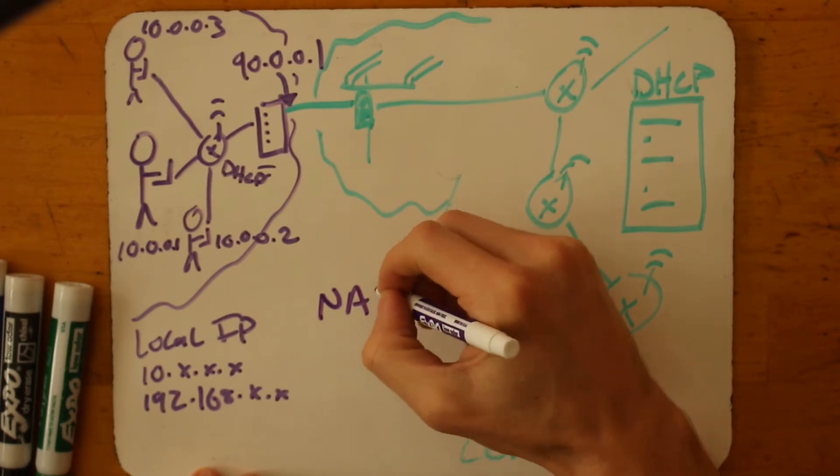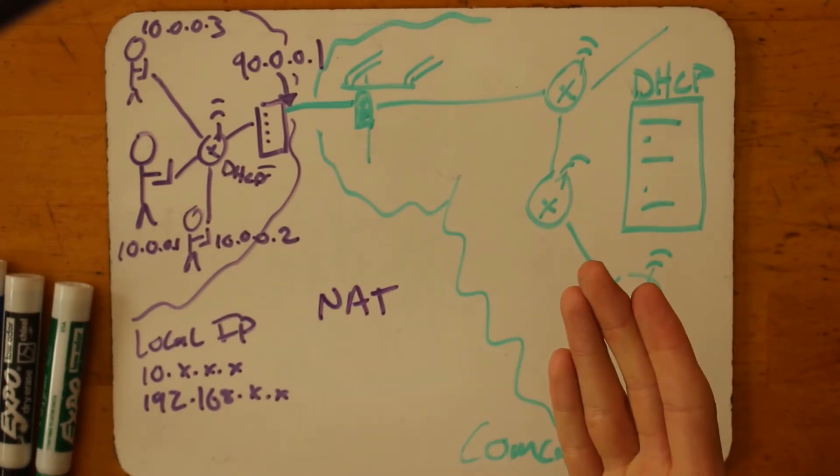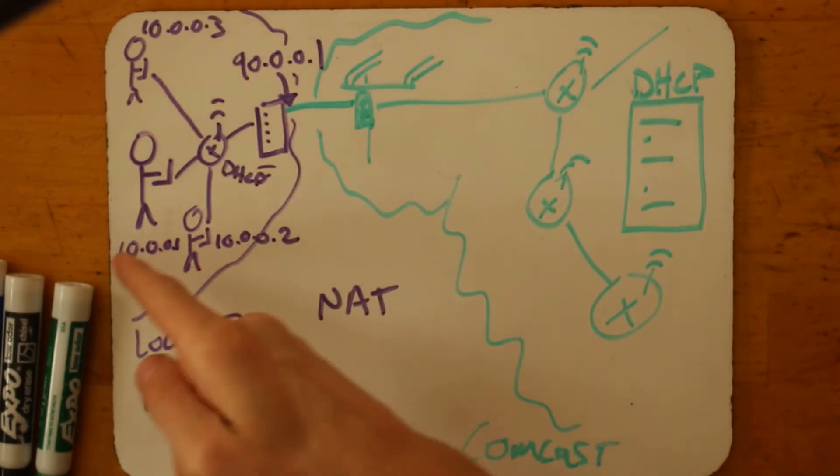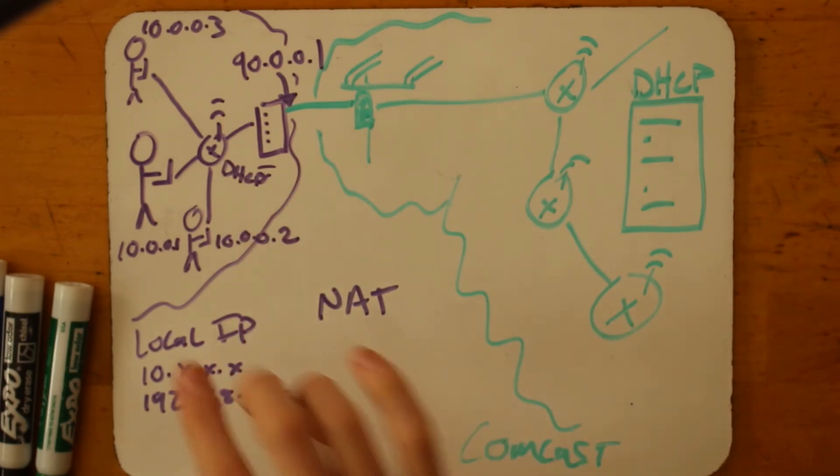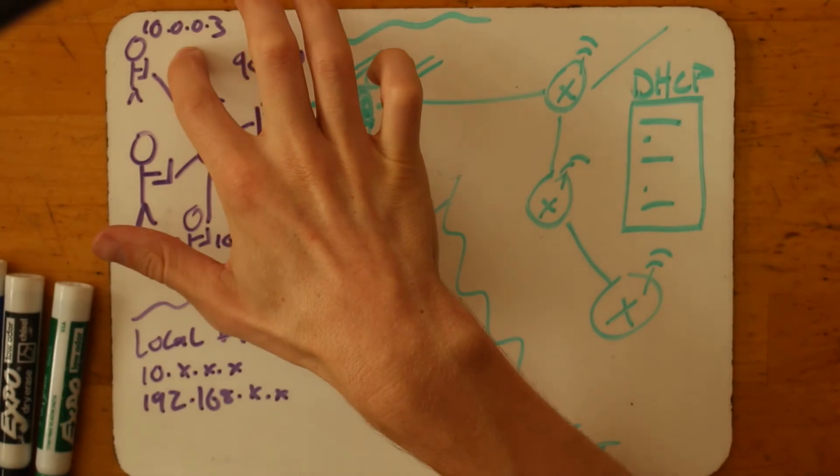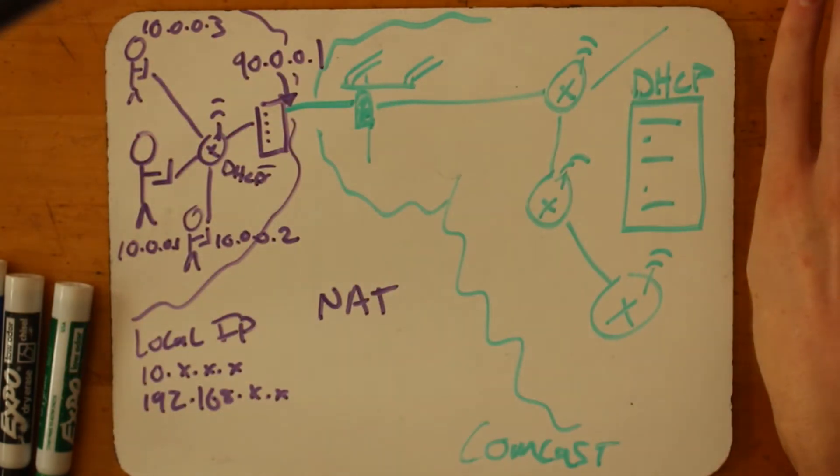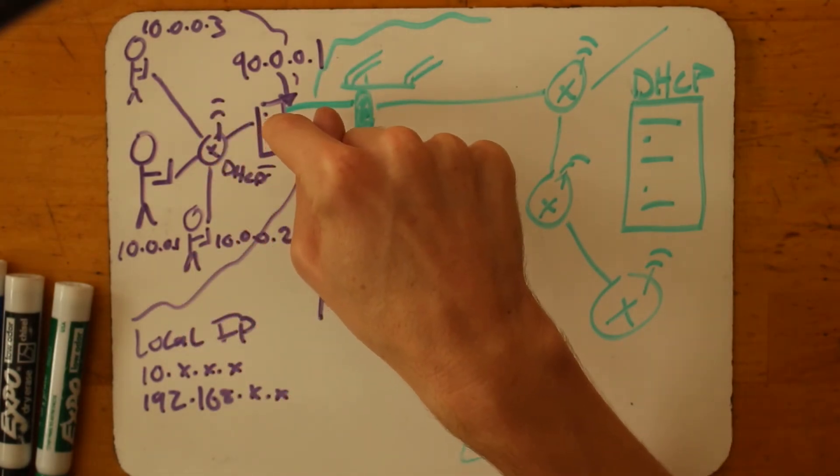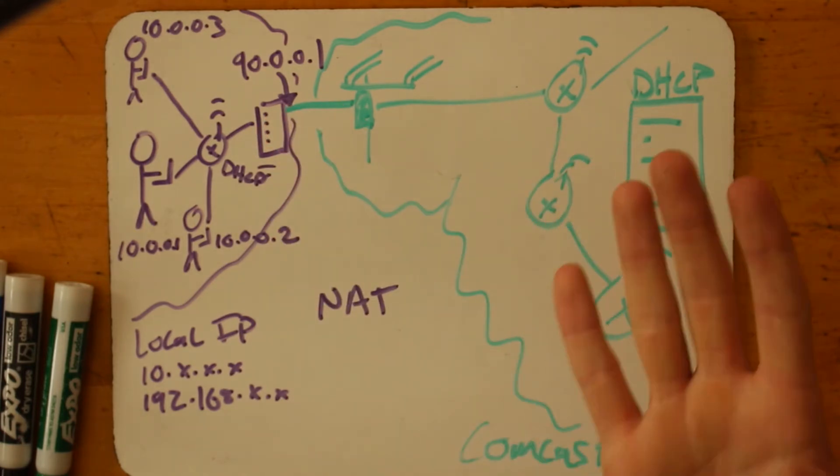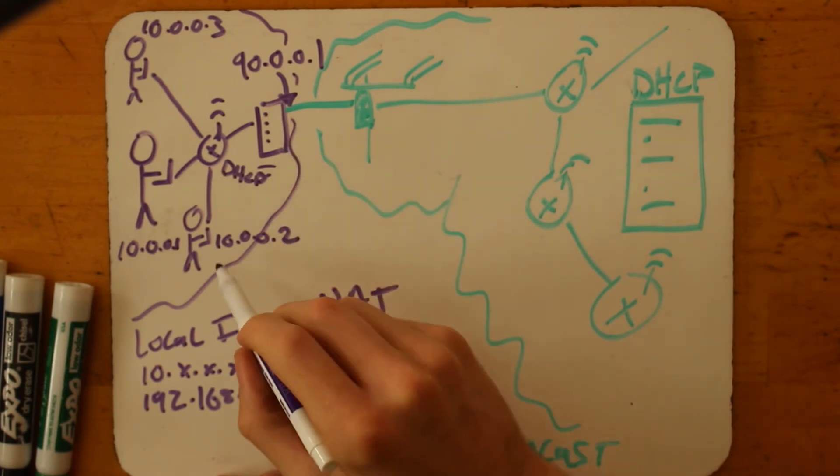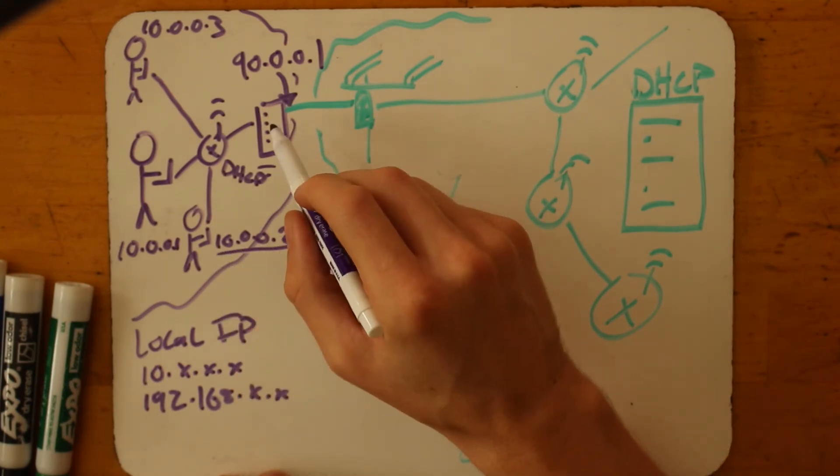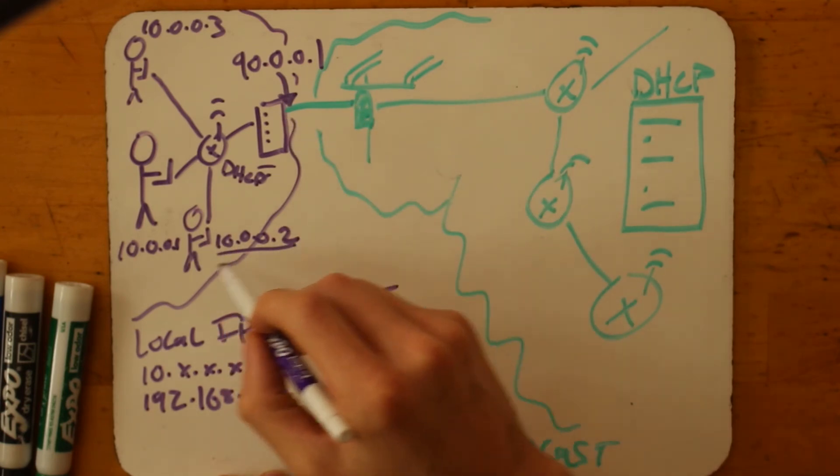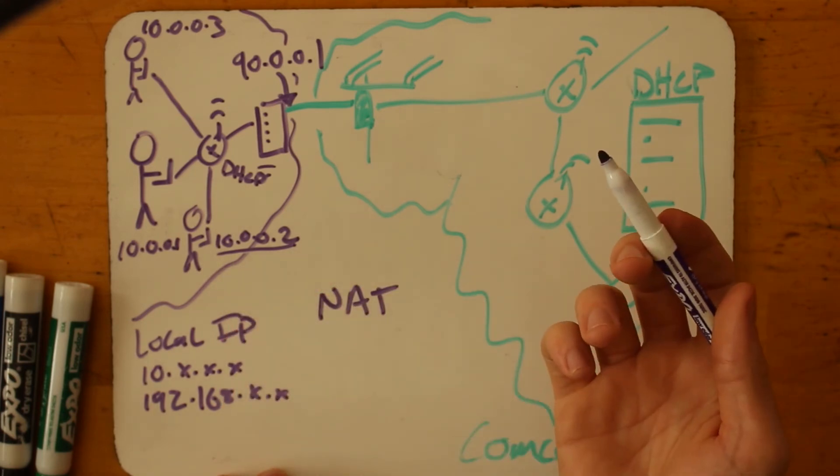Okay. So something called network address translation runs at the border between the public IP address over here and the private IP addresses over here that allow us to communicate using this private IP address and allow other people to communicate using this public IP address. And this modem at the gateway here has a table that translates.